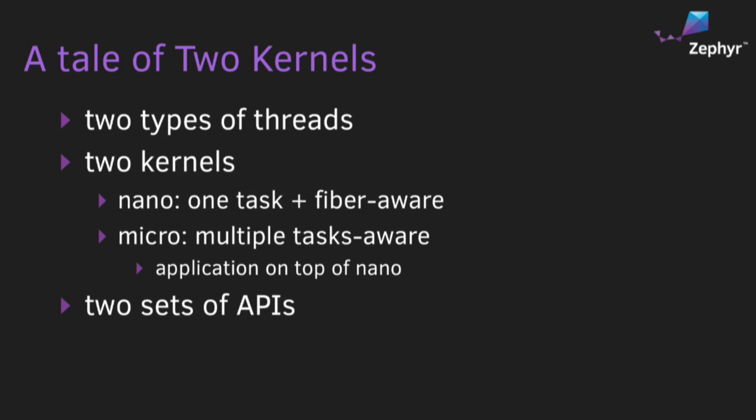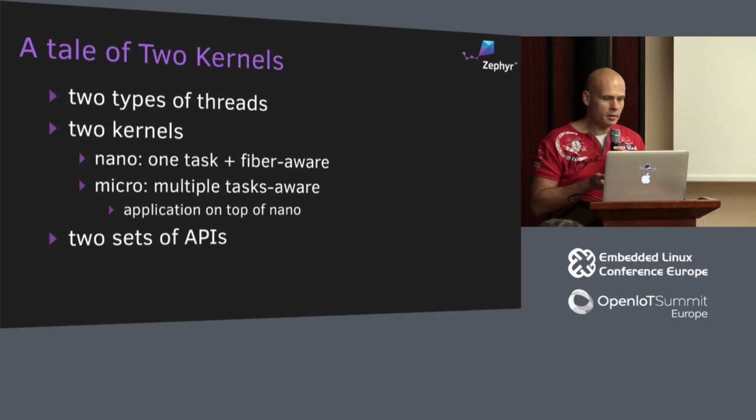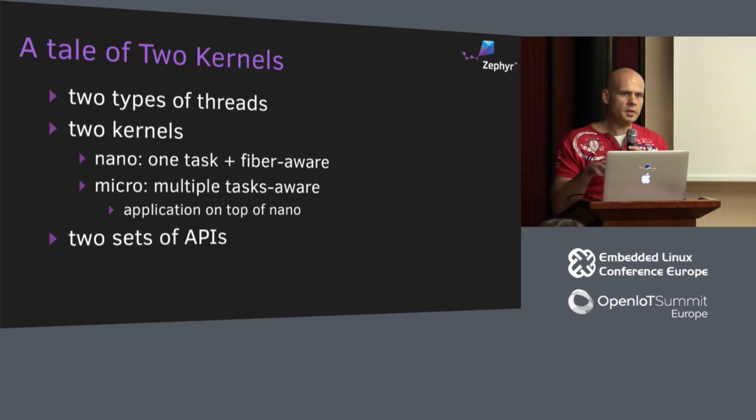One type is cooperative threads, which we call fibers, and preemptible threads that we call tasks. It's not implemented in one kernel — it's actually two kernels responsible for the different types of threads. The nano kernel is at the core of the OS; it only knows about one task and manages all the fibers. The micro kernel is written as an application on top of the nano kernel and is task-aware — it manages the tasks but doesn't know about the fibers.